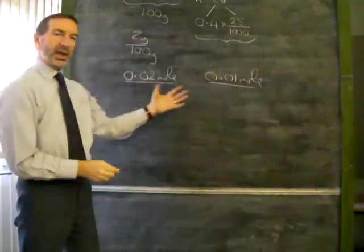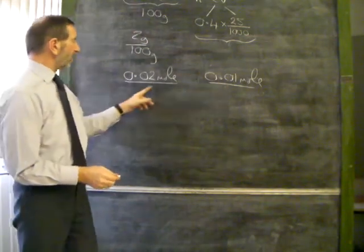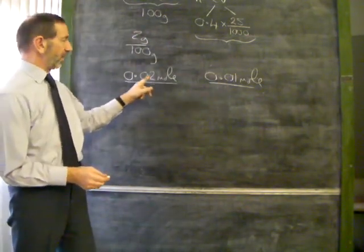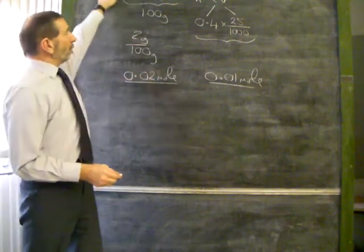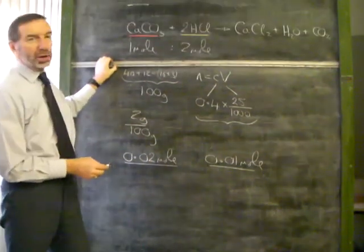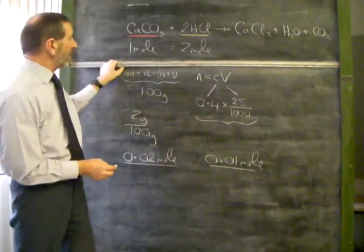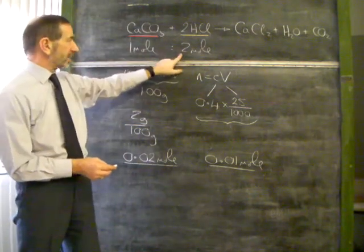Now, which is in excess? It looks easy, it looks automatically as if this is in excess, but we have to check. We go back here, according to our recipe, according to our equation, we need only half as much calcium carbonate as acid. Two lots of acid require only one lot of calcium carbonate.